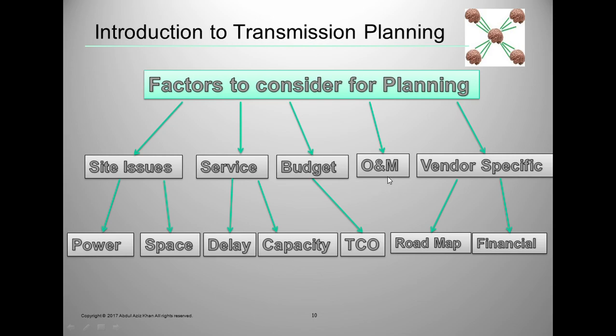We should ensure that O&M is easy and that the vendor can supply everything needed to operate the technology. Vendor-specific considerations include the vendor roadmap — whether they can support future upgrades or new features — and their financial capability to deliver properly. These are not exhaustive factors, but if considered well during initial planning, they help avoid many problems in the future.